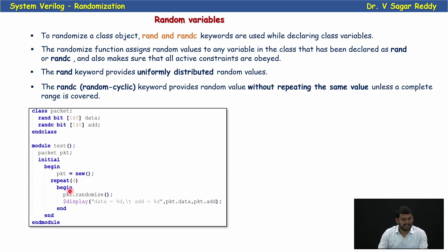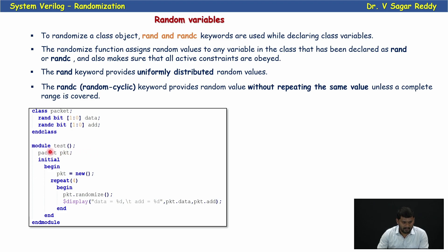Now let's see a simple example. I define a class with the name packet. I declare two variables — data and addr — as bit type, one down to zero, with a rand modifier and randc modifier. In the module test, I declare a handle PKT of type packet, then create an instance of the class packet.